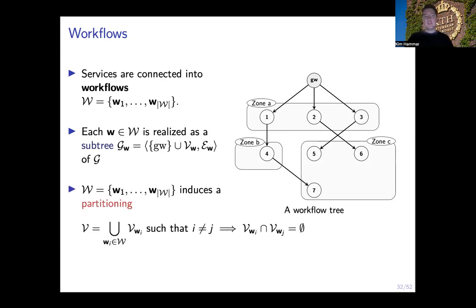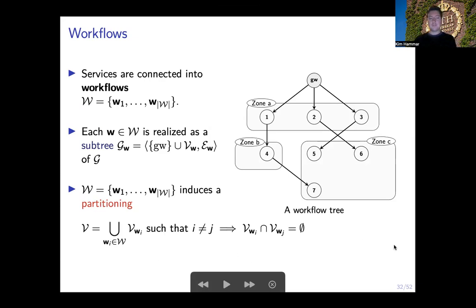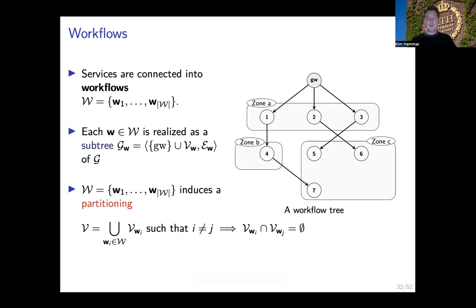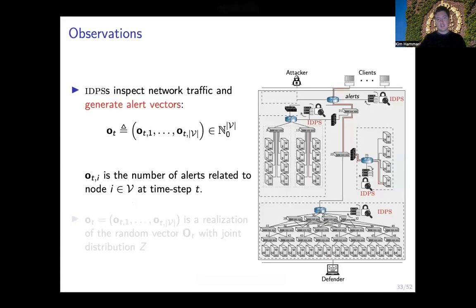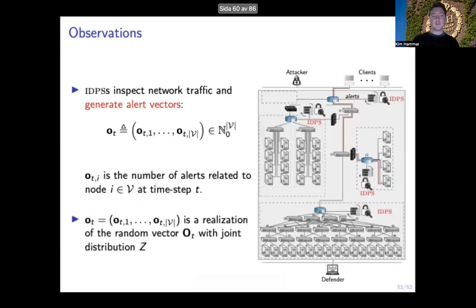Our main assumption is that every node is part of exactly one workflow. This is very convenient because it means the set of workflows induces a partitioning of the set of nodes, such that the set of all nodes V is a non-overlapping union of V_w for each workflow w. I will utilize this property later to prove a decomposition theorem. The workflows are consumed by clients, and these interactions generate traffic on the network which the defender observes through intrusion detection systems that generate alert vectors o_t, where each component corresponds to the number of alerts for a given node at a given time.